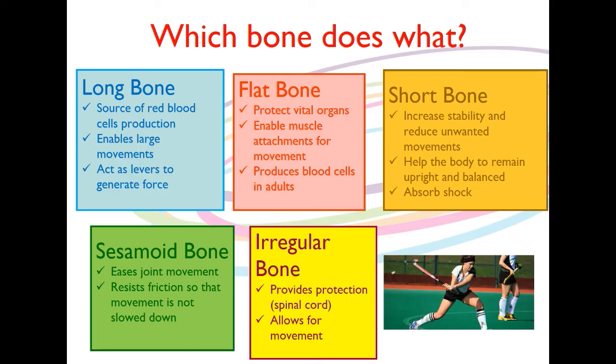Flat bones enable muscle attachment for movement, and they produce blood cells in adults, not in children. The short bones increase stability and reduce unwanted movements — they help the body to remain upright and balanced, and they are shock absorbers, helping to absorb force when we're jumping or running. The sesamoid bones help to ease joint movement and resist friction so that movement isn't slowed down. And the irregular bones provide protection for the spinal cord and allow for movement. Hopefully the graphic will make it much easier to see which bones do what.